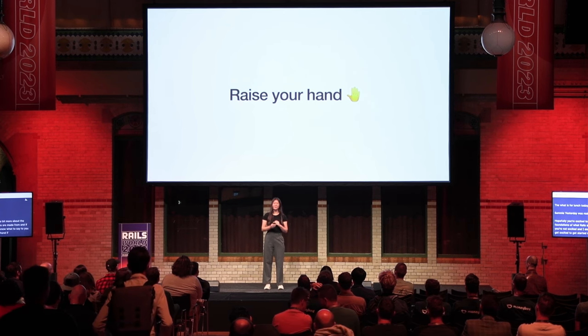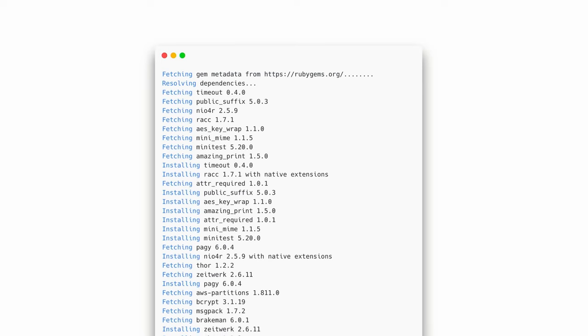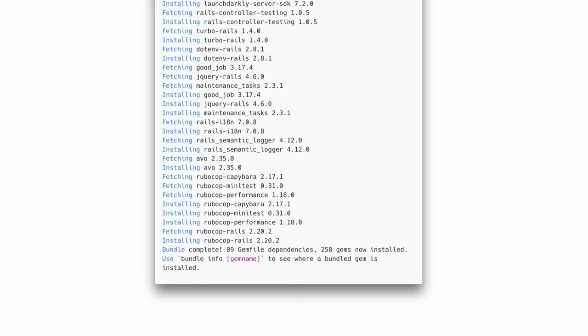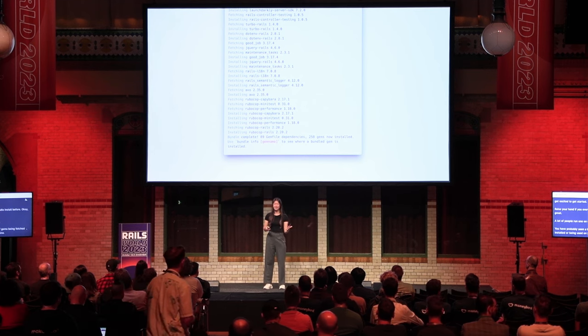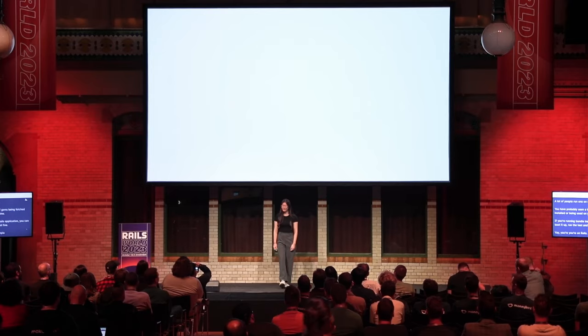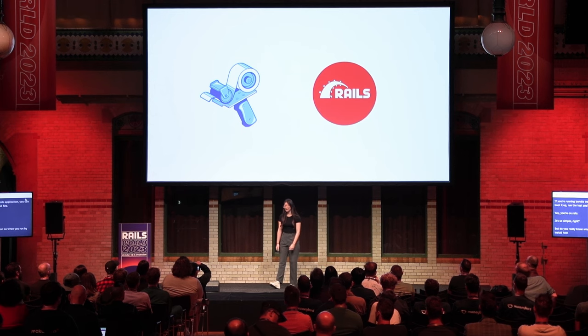To get us started, raise your hand if you ever have run bundle install before. A lot of people have run bundle install. Then you have probably seen a long list of gems being fetched, installed, or being used on your machine. If you're running bundle install in a Rails application, you can boot it up, run the tests, and it's working all fine — you're on Rails. But do you really know what's going on when you run bundle install? How can gems be used right out of the box in a Rails application? These are questions that I was wondering about and wanted to get to the bottom of.